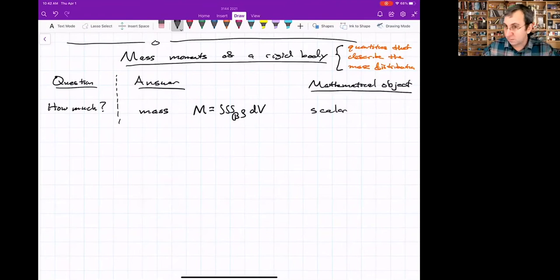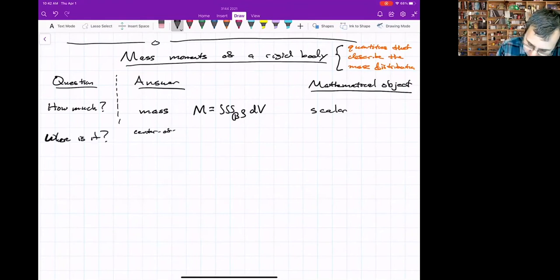The next question would be, if I have the potato somewhere in this room, where is it? Where is it is given by the center of mass. If you want to give what's the average location for a mass distribution, it's the center of mass.